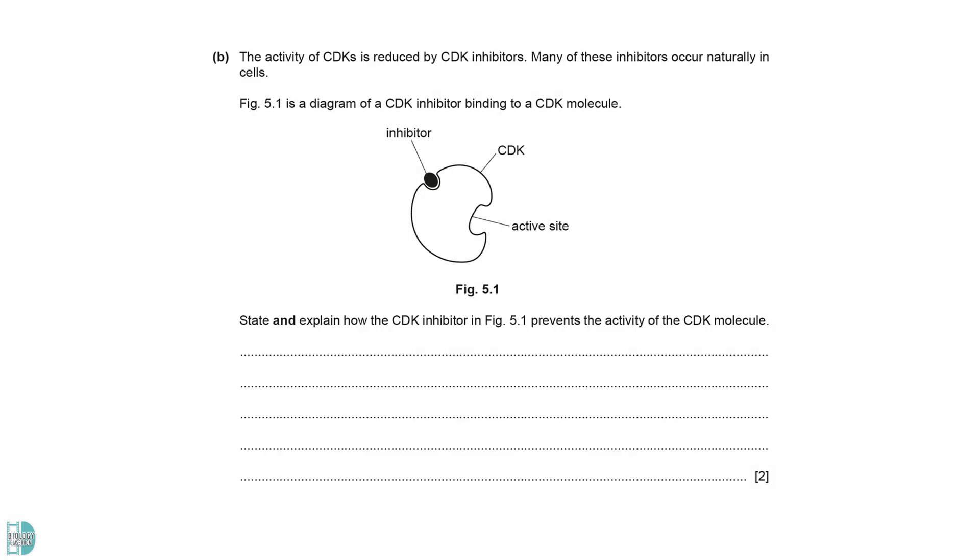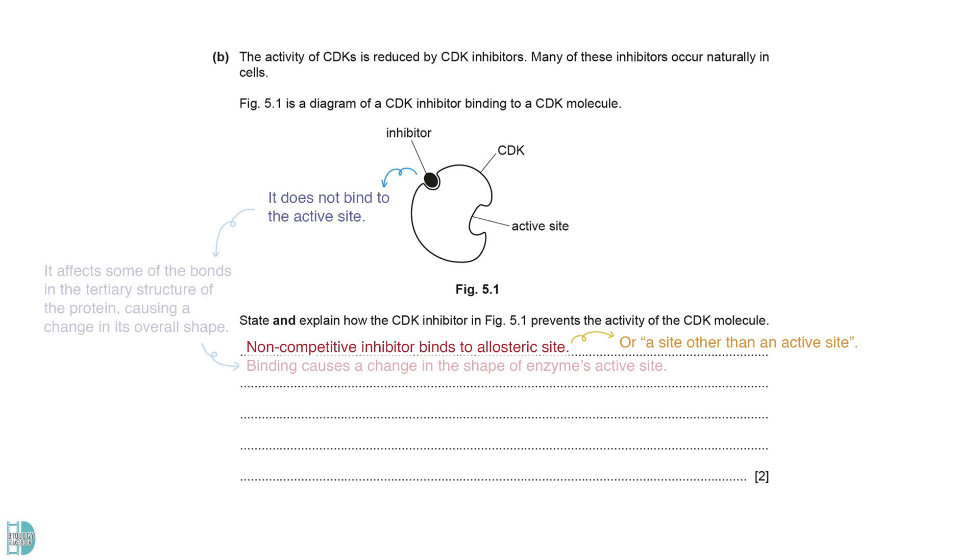State and explain how the CDK inhibitor prevents the activities of the CDK molecule. Since it does not bind to the active site, it is a non-competitive inhibitor. It binds to the allosteric site. You can also describe it as a site other than an active site. The binding affects some of the bonds in the tertiary structure of the protein, causing a change in its overall shape, which in turn affects the shape of the active site. The enzyme loses its specificity as the active site is no longer complementary to the substrate.